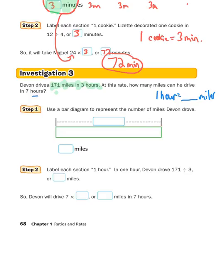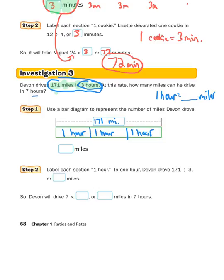Step one: use a bar diagram to represent the number of miles Devin drove. The total miles is 171 miles, and it was in three hours, so split this into three — each one is an hour. Didn't we just take 171 miles and split it, or divide it, into three hours? Type that in your calculator — 171 divided by three. Did you get 57? That means each hour took 57 miles.